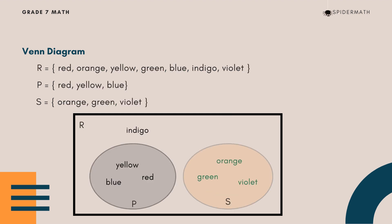Here is another example. The universal set R is the set of colors of the rainbow. Set P is the set of primary colors, and as you can see, it is a subset of set R. Set S is the set of secondary colors, which is also a subset of set R.